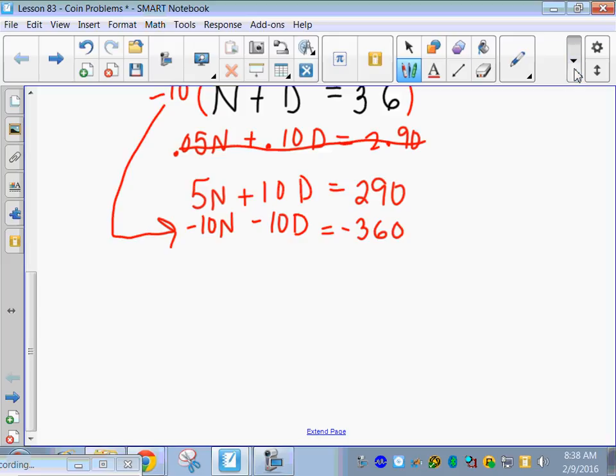And now we can add down to solve. So, 5N minus 10N is what? Let me get that. Negative 5N. What happens to my D's? Good, they go away. And over here, 290 and negative 360, what's that? Negative 70, good.